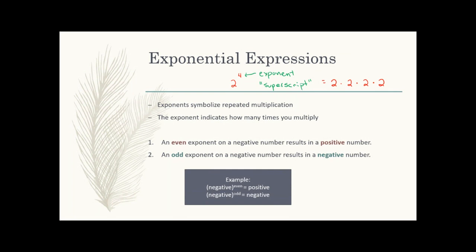Because exponents involve multiplication, we follow the same rules for negatives. If you have an even exponent on a negative number, you get a positive answer because you'll have an even number of negative signs when you write it out. If it's an odd exponent on a negative, your answer is negative because you'll end up with an odd number of negative signs. So: a negative number in parentheses with an even exponent gives a positive; with an odd exponent gives a negative.